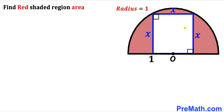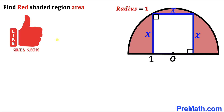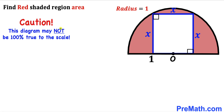Welcome to PreMath. In this video, we have got this blue square fully inscribed in a semicircle with the center O, as you can see in this diagram, such that the radius of this semicircle is one unit and the side length of this blue square is represented by X. Keep in mind that this segment is equal to this segment. Our task is to calculate the area of this red shaded region — this area, this area, and this area combined. Please note that this figure may not be 100% true to scale.